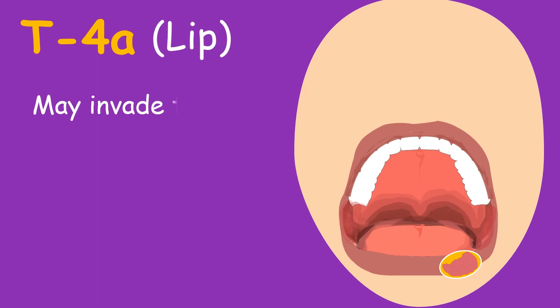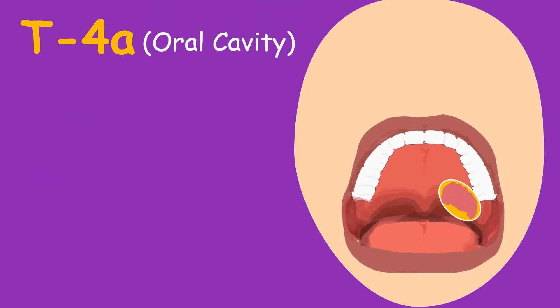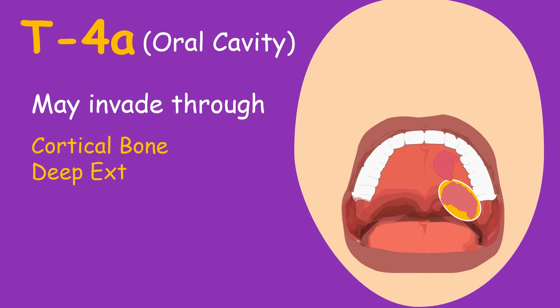If it is present on the lip, it may invade through cortical bone, inferior alveolar nerve, floor of mouth, and the skin of face. In T4a of the oral cavity, the tumor cells may invade through the cortical bone,